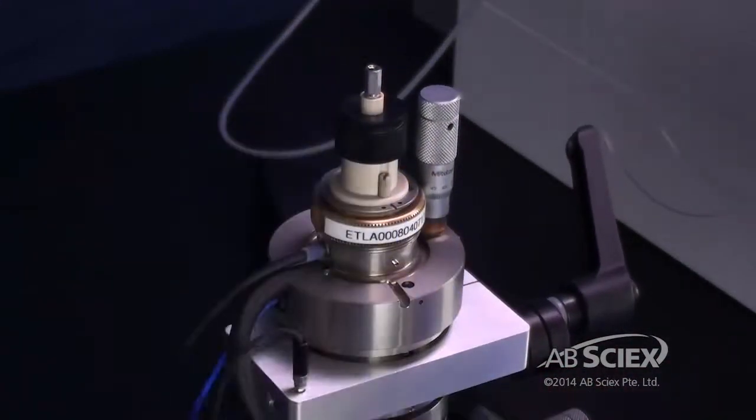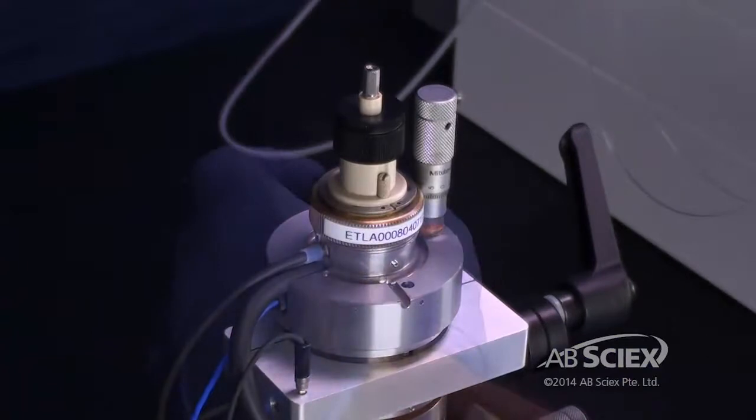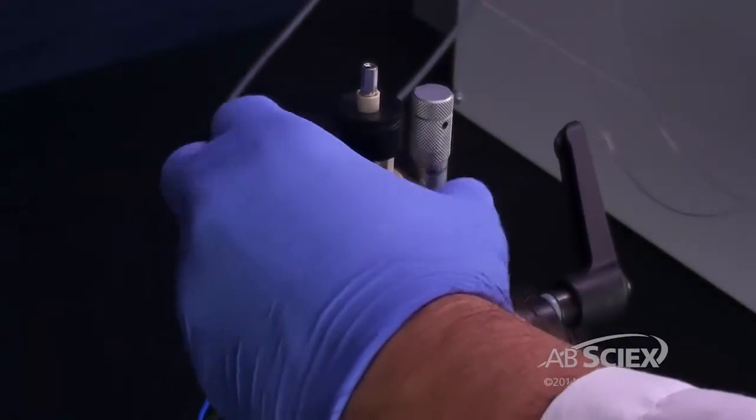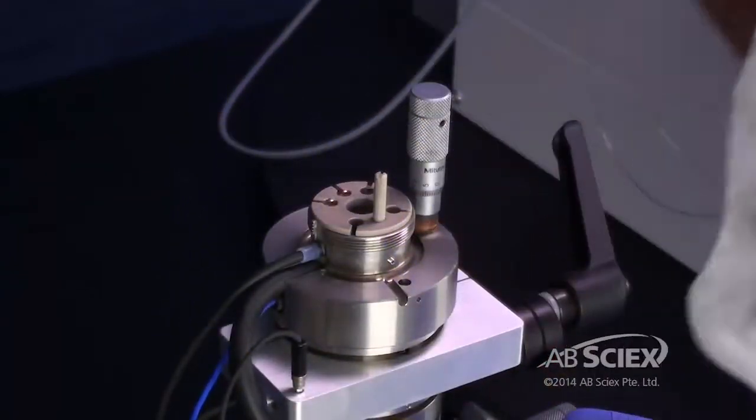Remove the grounding clip from the probe. Loosen the bronze retaining ring that fastens the probe to the iron source housing and gently pull the probe straight up out of the tower.